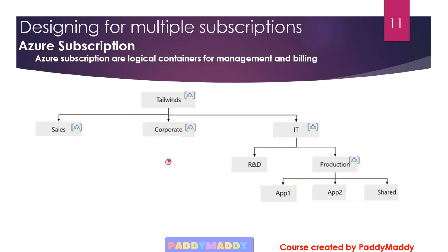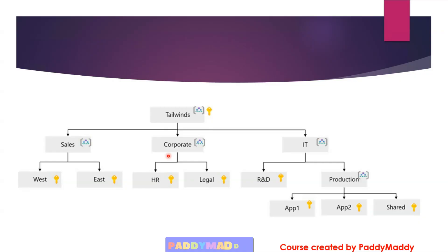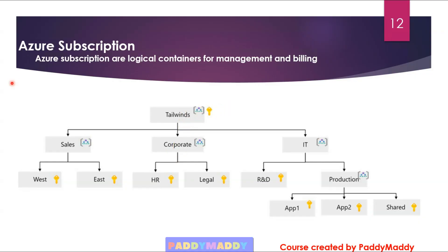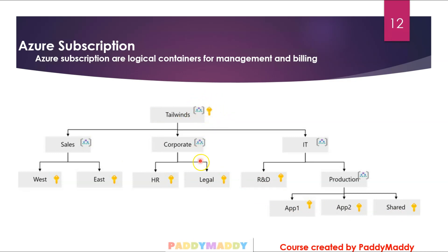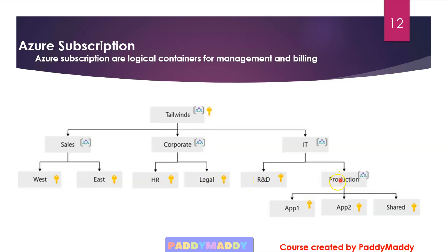A possible solution could involve multiple subscriptions. For example, Tailwind has their own enterprise subscription, plus other subscriptions for Sales West, Sales East, Corporate, HR, and Legal departments. Additionally, R&D, Production Application One, Application Two, and shared applications could each have their own subscriptions so that you can track them individually.